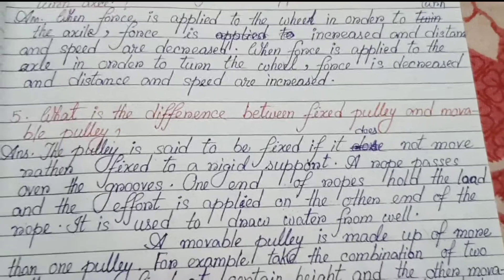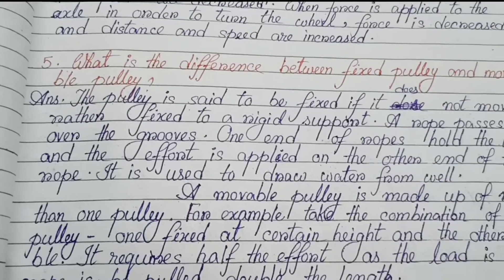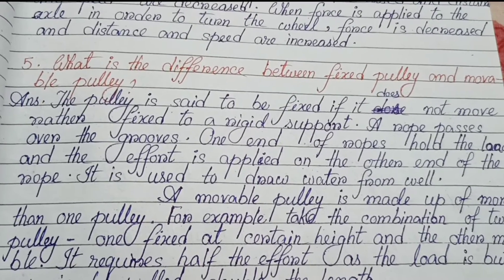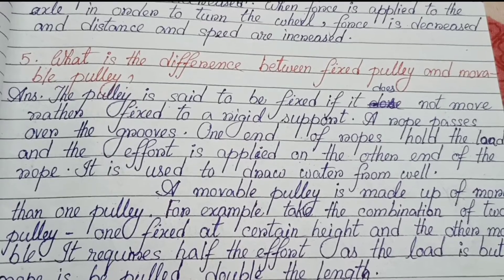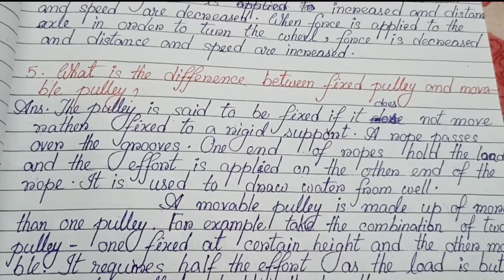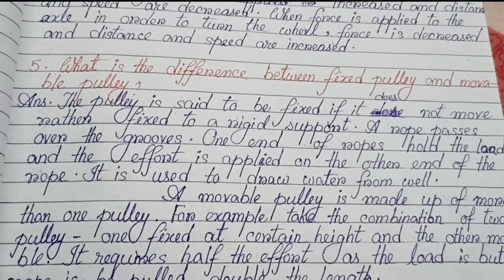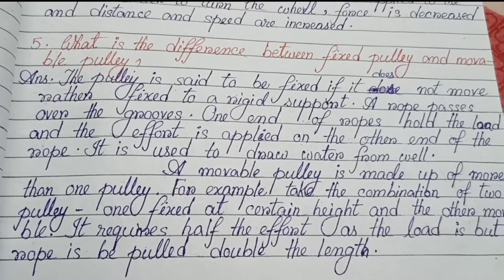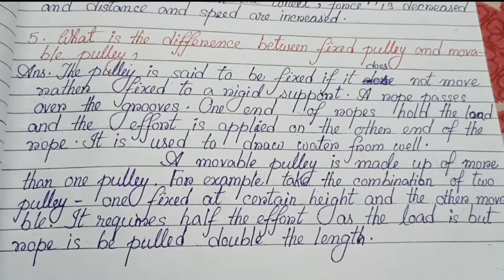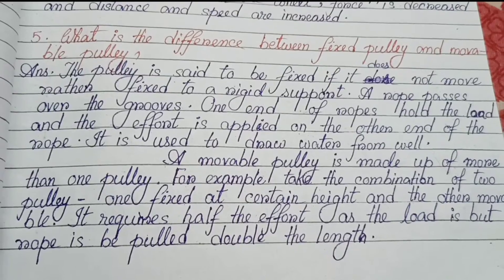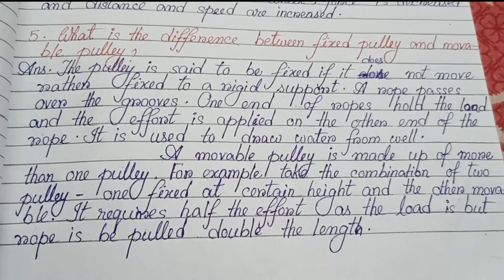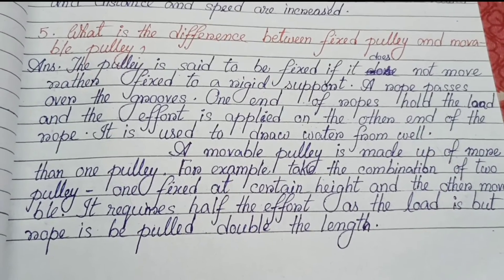Question five: What is the difference between fixed pulley and movable pulley? A pulley is said to be fixed if it does not move and is fixed to a rigid support. A rope passes over the grooves; one end holds the load and the effort is applied on the other end. It is used to draw water from a well. A movable pulley is made up of more than one pulley — for example, a combination of two pulleys, one fixed at a certain height and the other movable. It requires half the effort but the rope must be pulled double the length.